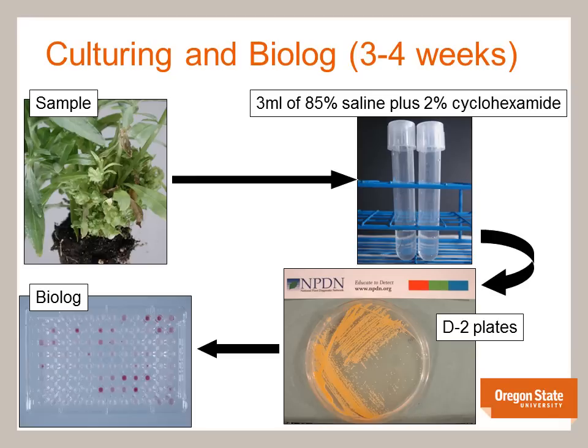Once we have pure colonies, they are gram-stained to verify that they are gram-positive and also to check cell morphology. Selected colonies are then prepared for BioLog, which is a bacterial identification assay based on substrate utilization. Unfortunately, we have found this assay to be unreliable for identification of Rhodococcus fascians. Of 30 bacterial isolates which produced leafy galls on indicator plants, only 6 were correctly identified by BioLog as Rhodococcus fascians. The BioLog assay also cannot differentiate between virulent and avirulent strains of Rhodococcus fascians.